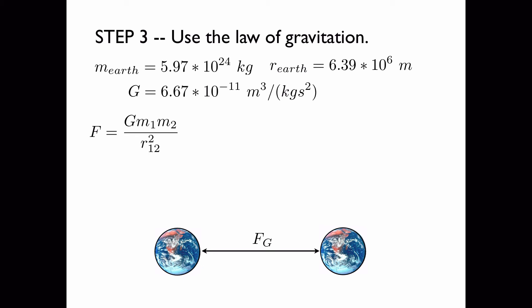Mass one and mass two are both equal to the mass of the earth. So we have G times the mass of the earth squared divided by the distance between them, which we just found to be seven times the radius of the earth.